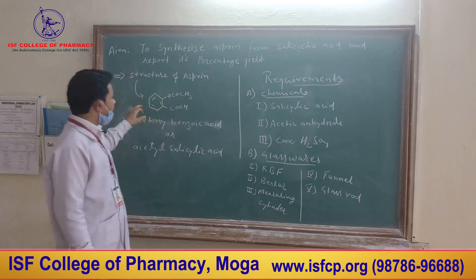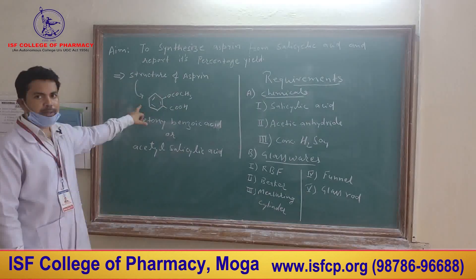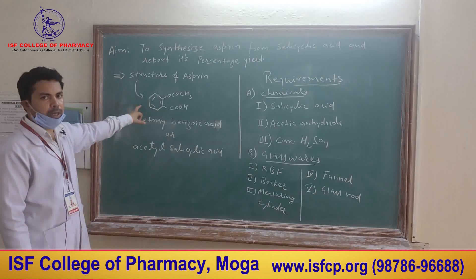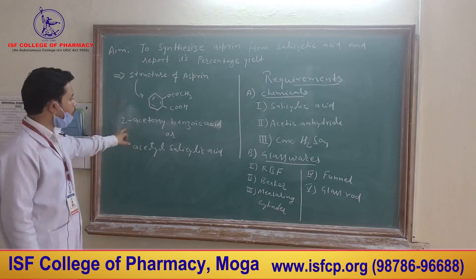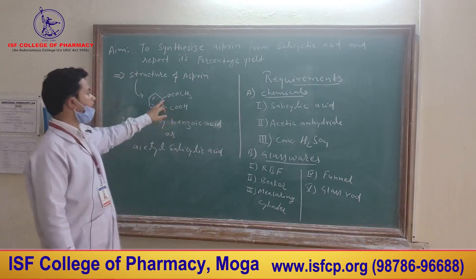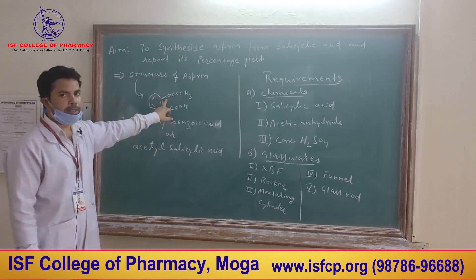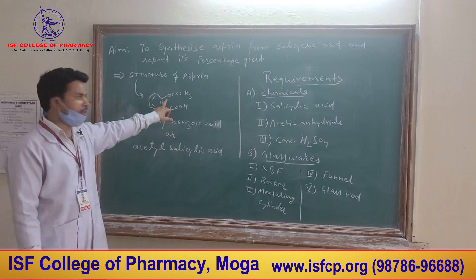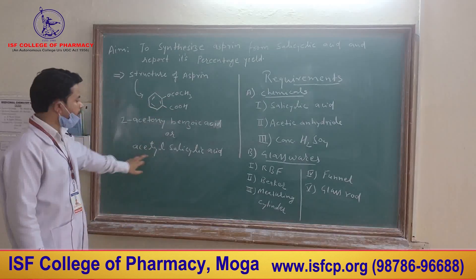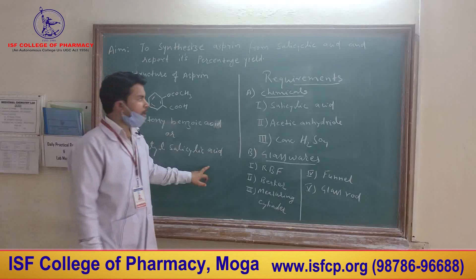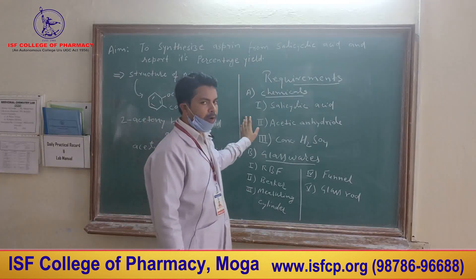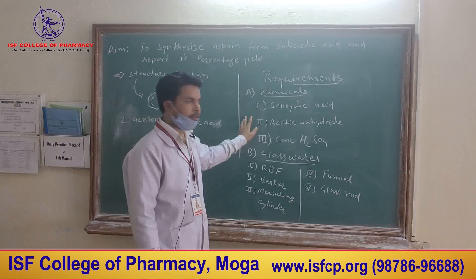This is the chemical structure of aspirin. The chemical name of aspirin is 2-acetoxybenzoic acid, because at the second position an acetoxy group is attached. Another name is acetylsalicylic acid. These are the various requirements for performing this experiment.